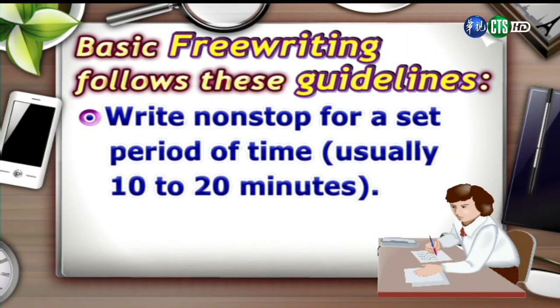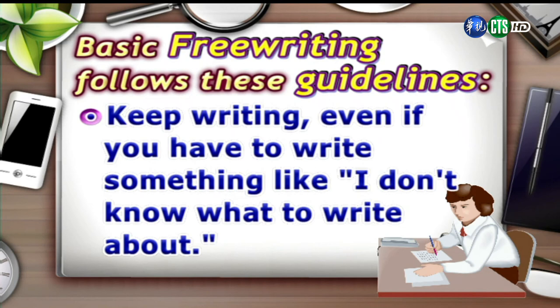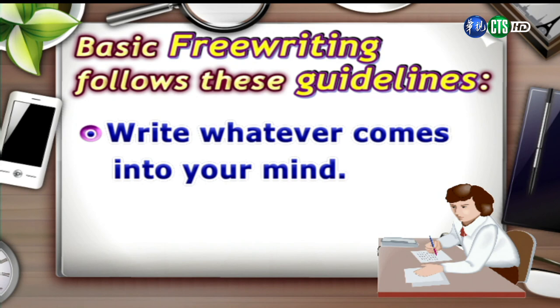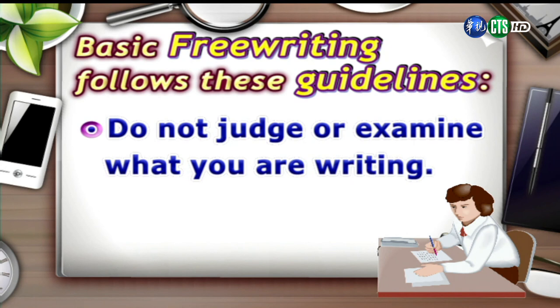The first principle is that you should write non-stop for a set period of time, usually 10 to 20 minutes. 在一個特定的時間內，通常是10到20分鐘，你應該不間歇地持續寫作。Next, keep writing even if you have to write something like "I don't know what to write about." 即使你真的想不出寫什麼，甚至寫下「我不知道該寫什麼」，這樣也沒有關係。Don't make corrections as you write — write down any idea that enters your mind. 在寫的過程之中千萬不要停下來修正，不要去批評或是檢視你的寫作。